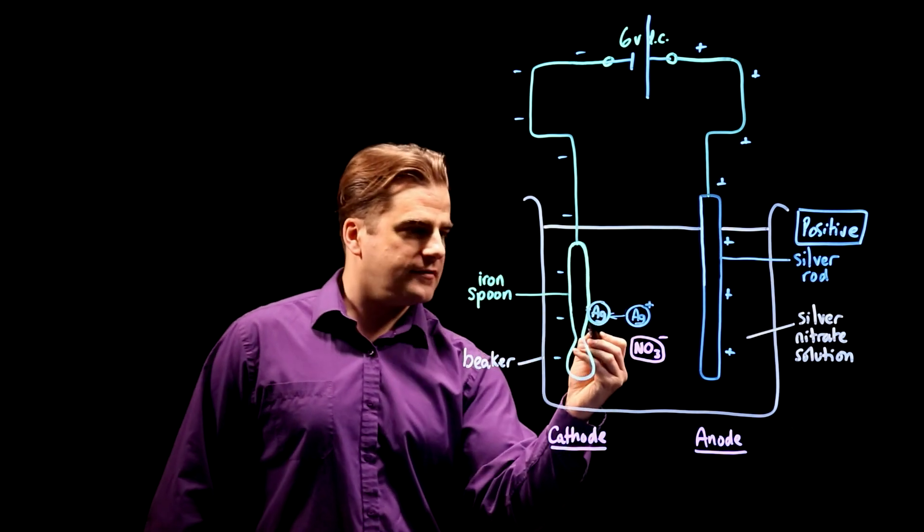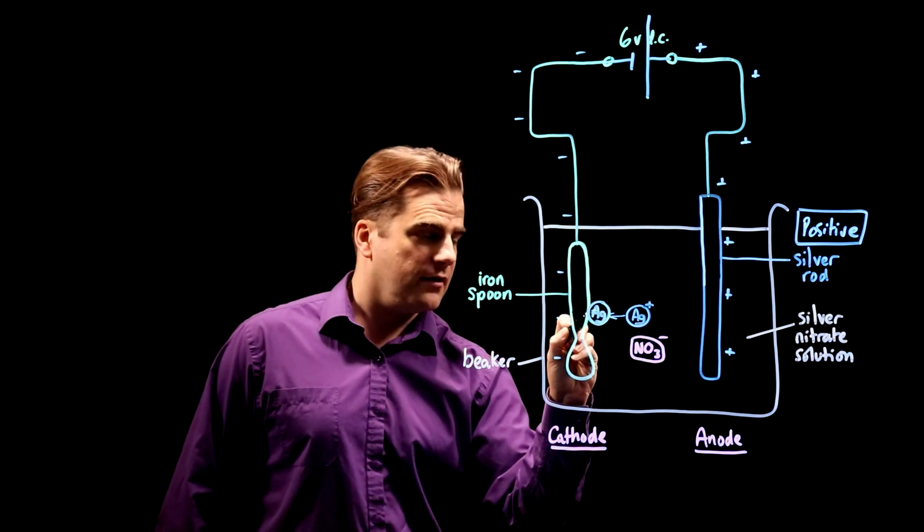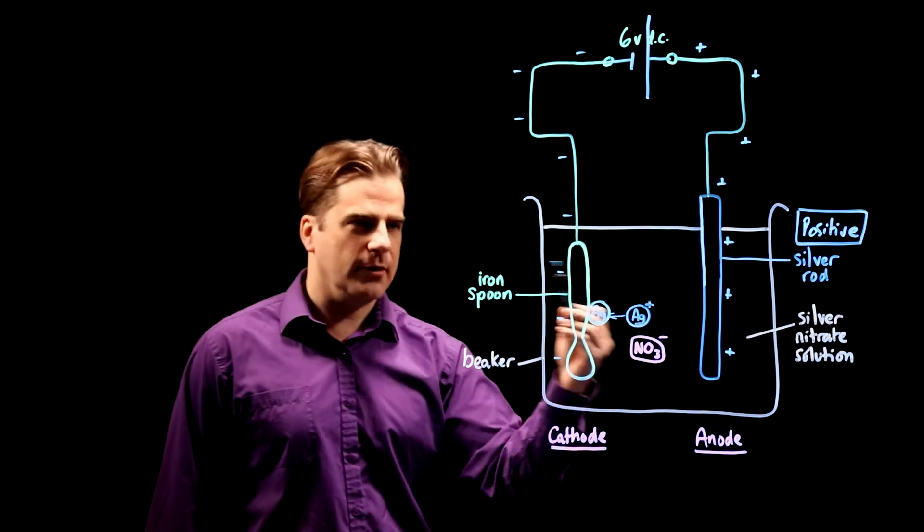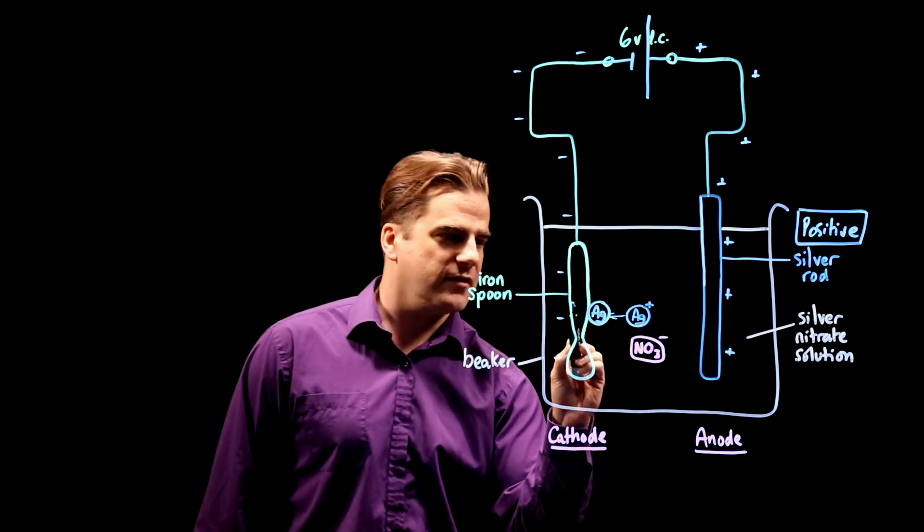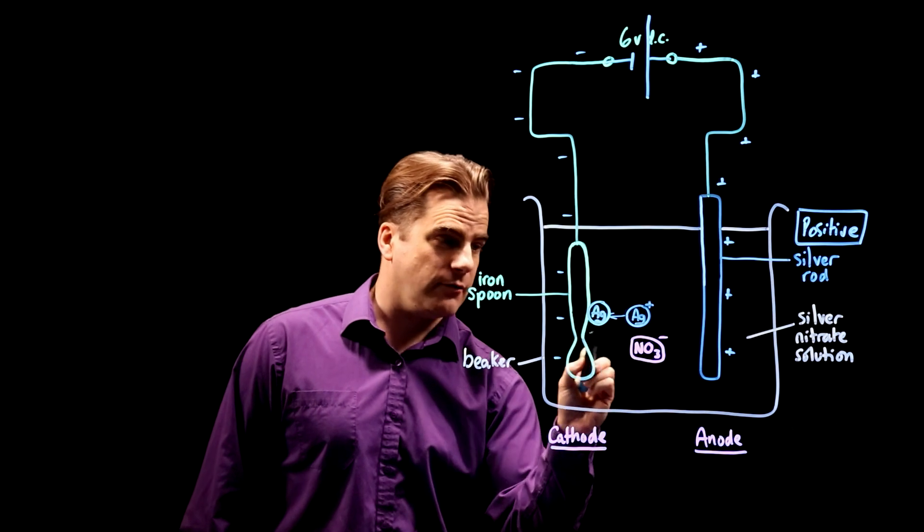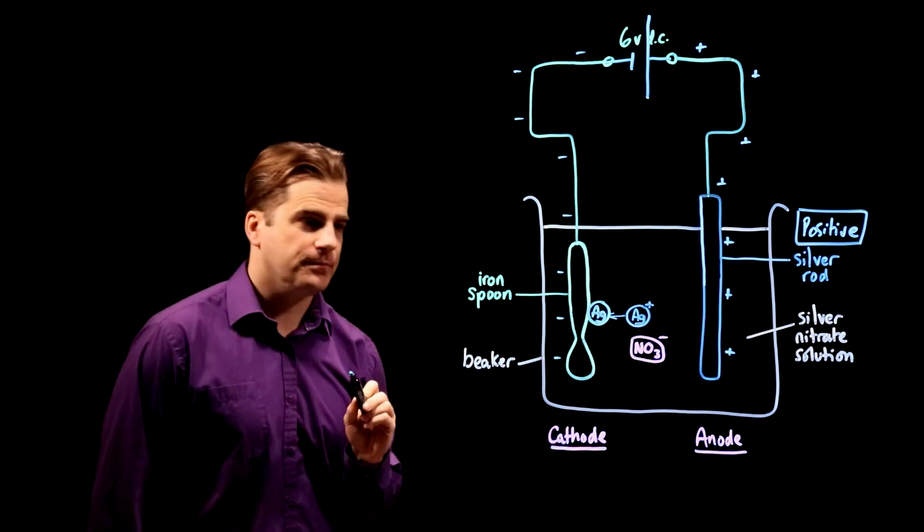And when it hits the spoon an electron from the spoon jumps onto the silver ion and turns it into a silver atom. Well, like I said before it was already an atom but it's no longer an ion because that electron that it's gained cancels out the positive charge and it's now neutrally charged and you have a silver atom bonded to the spoon.